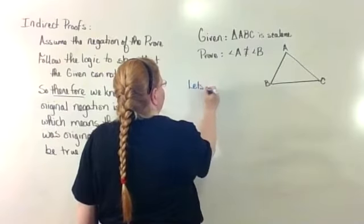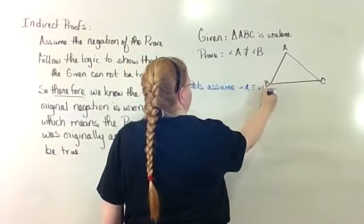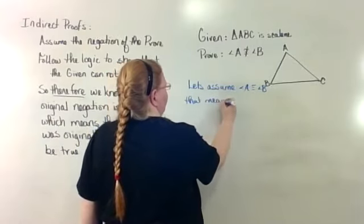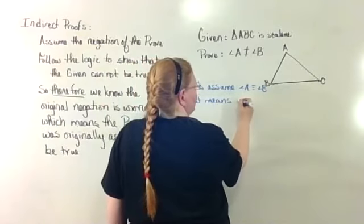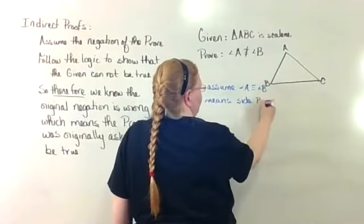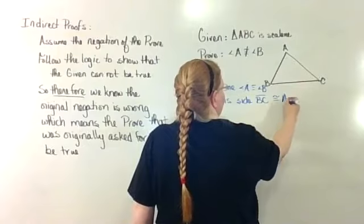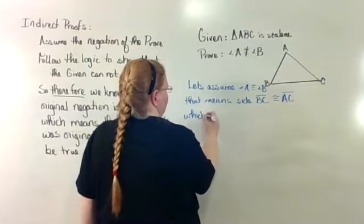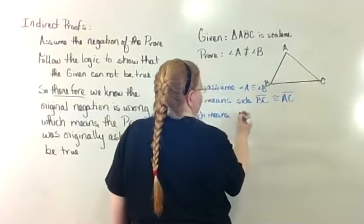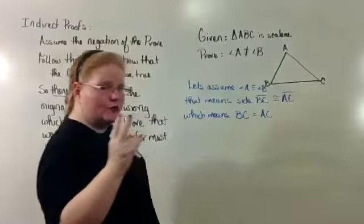I'm just going to angle B across from A. So side BC would have to be congruent to side AC, which means that the measure of BC is equal to AC.